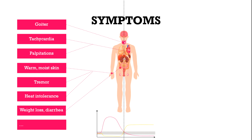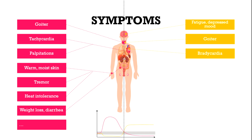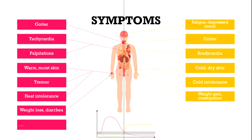With overt hypothyroidism, fatigue, depressed mood, goiter, bradycardia, cold dry skin, cold intolerance, weight gain, constipation, secondary amenorrhea, erectile dysfunction, and more can be examined.